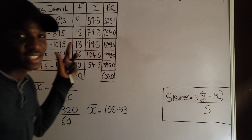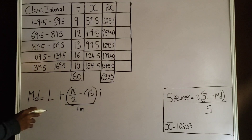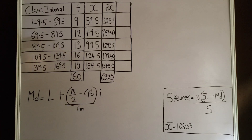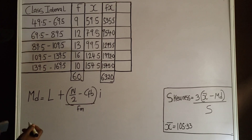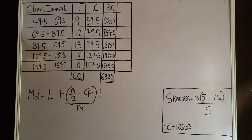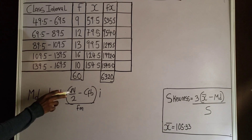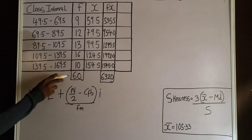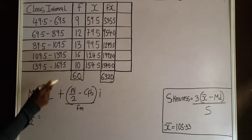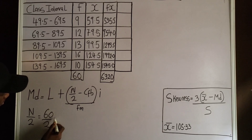Now I need to calculate the median. The median formula is: median equals L plus, in brackets, (n/2 minus cfb) over fm, multiplied by h. Here L is the lower class boundary, n is the total frequency, cfb is the cumulative frequency before the median class, fm is the frequency of the median class, and h is the class width. To find the median class, I divide n by 2: 60 over 2 equals 30.